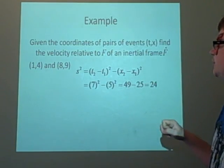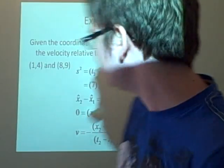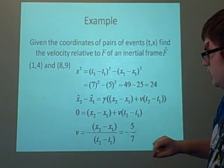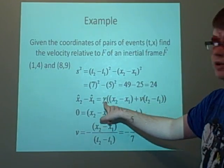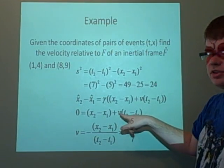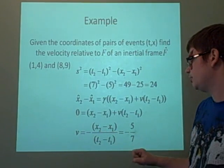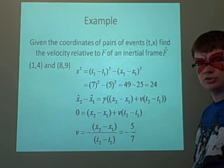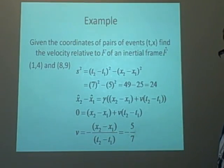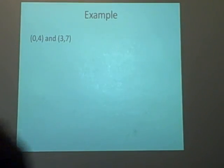For time-like, we let x₂-hat minus x₁-hat equal 0. Using the Lorentz equation and dividing by gamma, we rearrange to get the velocity: v = -(x₂ - x₁)/(t₂ - t₁) = -5/7. That's the velocity of frame f relative to f-hat.